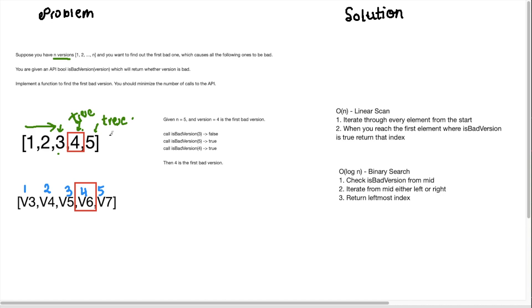The first solution that comes to mind when trying to solve this problem is just calling is bad version on each of the items in the array. So I would call is bad version one and that would return false and then go to two and then call is bad version two and that will return false and then go to three and say is bad version three and that will return false. And then at four we would say is bad version four and that would return true and that's the first true we're looking for.